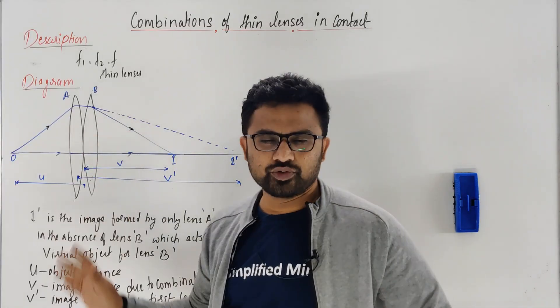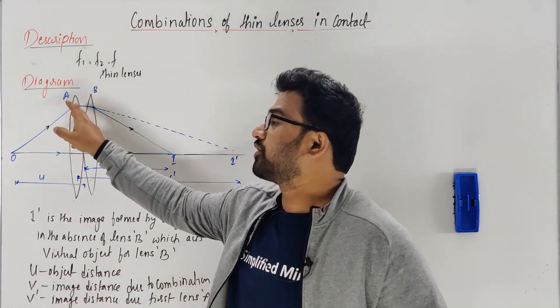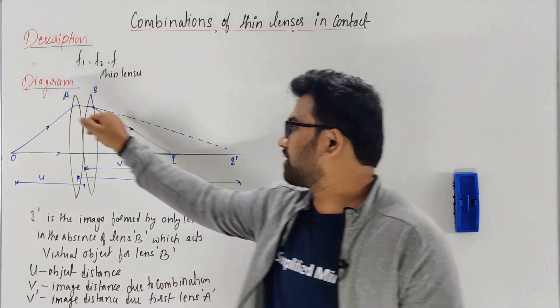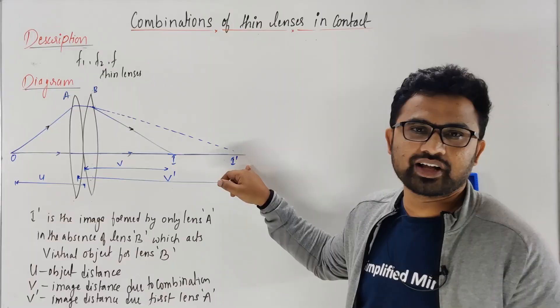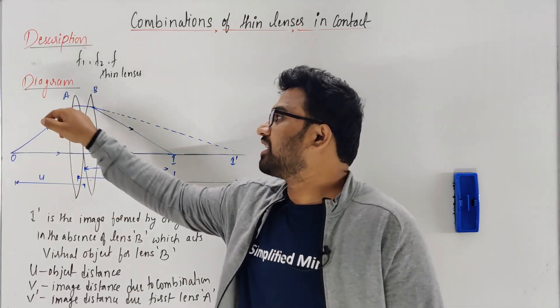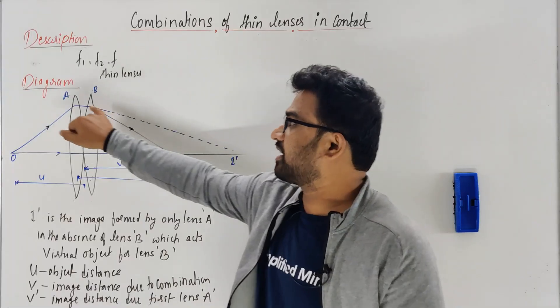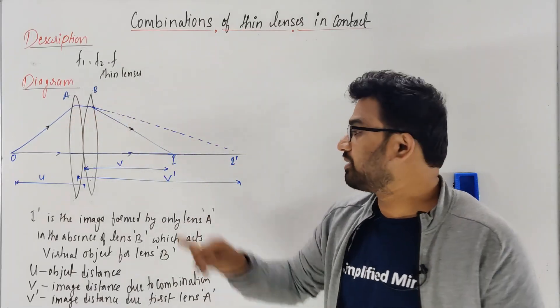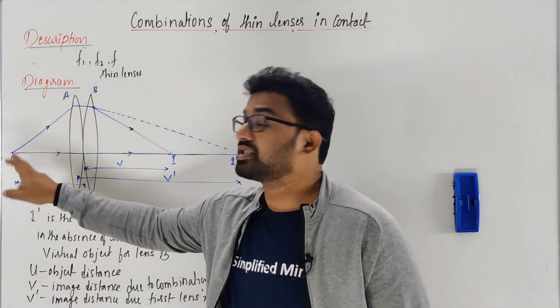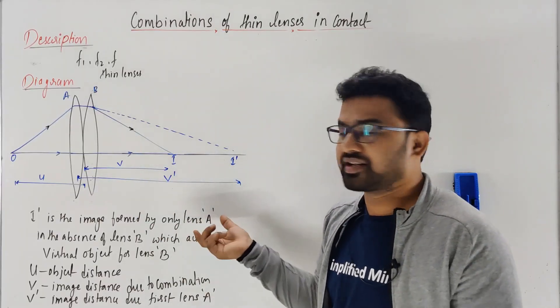The diagram is very simple. You have two lenses - object is here, and when the ray goes like this, due to the first lens (imagine there was no second lens), the ray would come somewhere here and the image forms. If lens B is not there, the image would have formed at I'. Because B is there, it undergoes refraction again and the image is actually formed here. Object distance is u, the final image of the combination is at distance v.